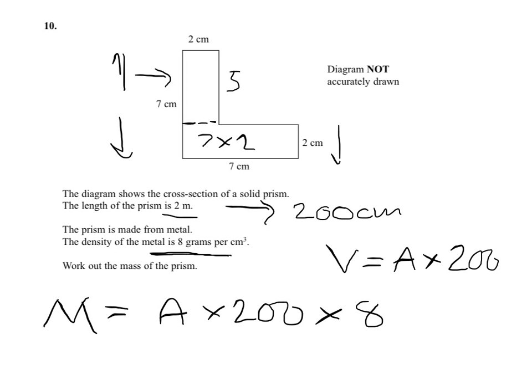It's going to be 7 subtract 2. So you've got your 2 here, so we need to subtract that to get our length here, which makes that 5. 2 times 5 is 10. Now 7 times 2 is 14, and 10 and 14 are 24.